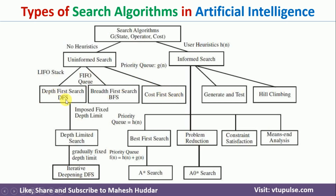Again, depth first search algorithm is divided into two things based on depth limit. Whenever you set the depth — for example, depth equals two — it will become a depth limit search. And if you go on increasing that depth from two to three, three to four, it will become iterative deepening depth first search algorithm. So these are some of the different algorithms which come under uninformed search.